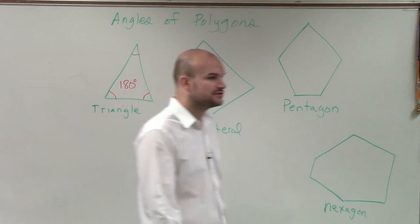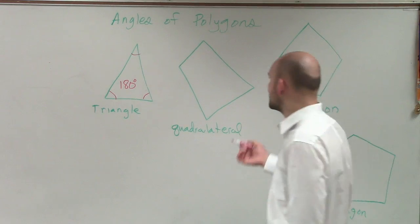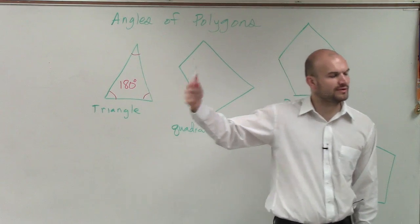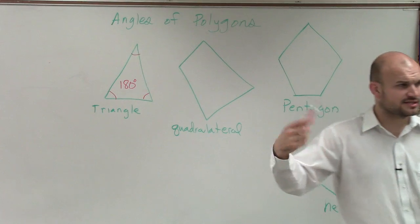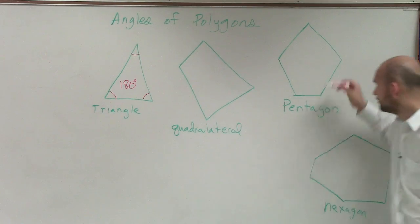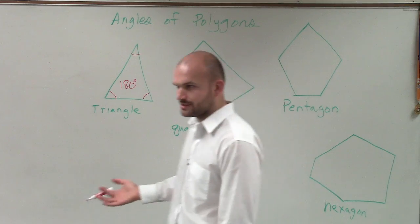So now what we're going to do is start classifying what are going to be all the angles for a quadrilateral. You guys should be fairly familiar with the triangle - the sum of all the angles add up to 180. But what is it for a quadrilateral? What is it for a pentagon? And what is it for a hexagon? What do all those angles add up to?